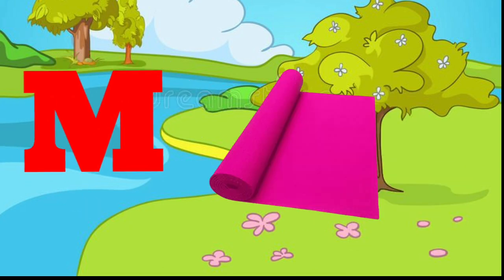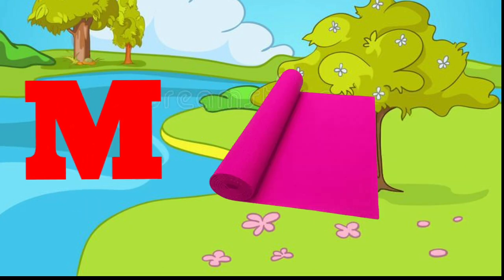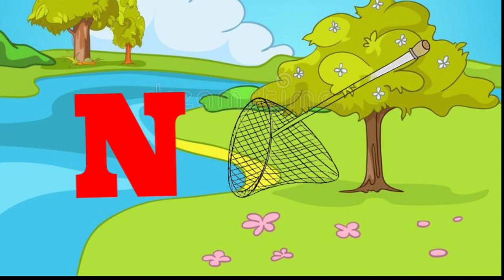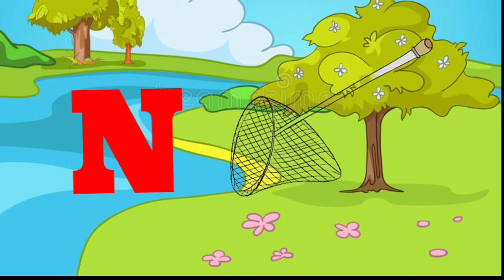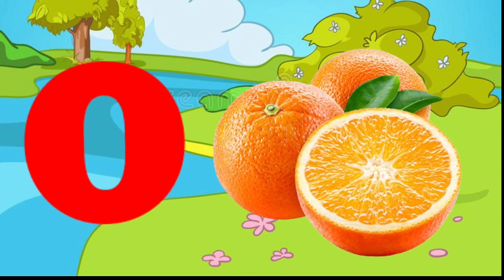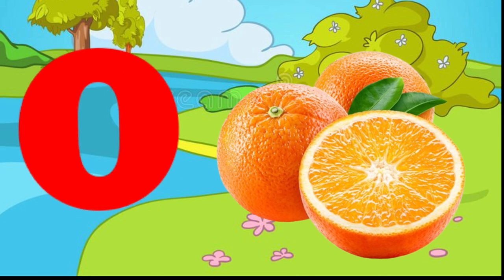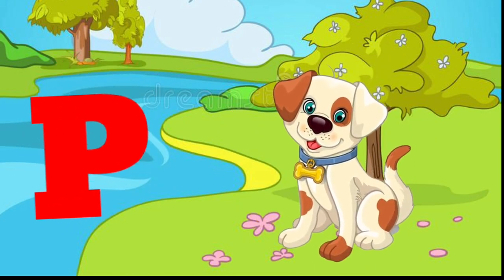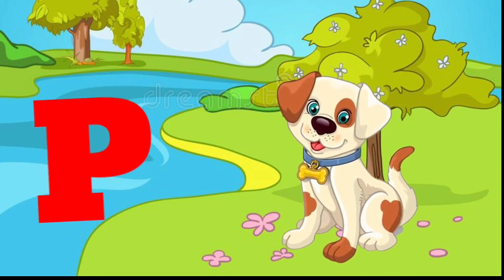M is for mat, m-m-mat. N is for net, n-n-net. O is for orange, o-o-orange. P is for pet, p-p-pet.